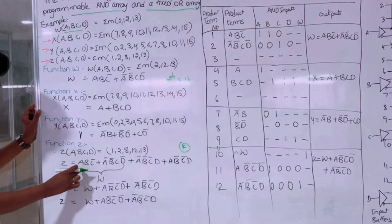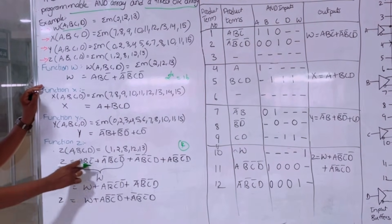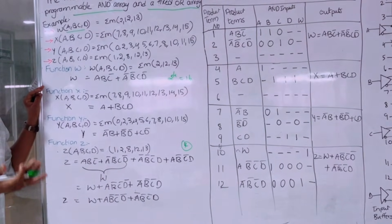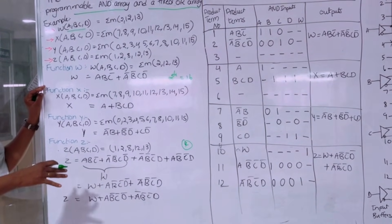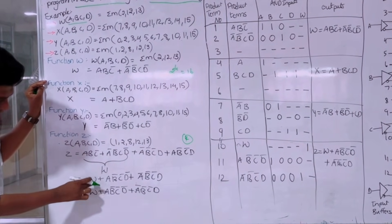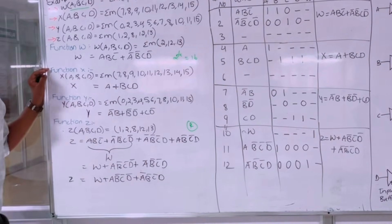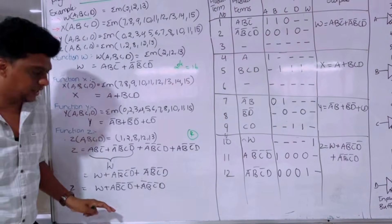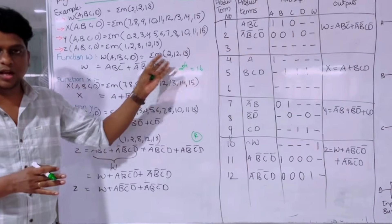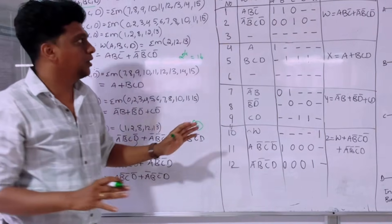To reduce Z from four to three product terms, we note that A B C bar plus A bar C D bar equals W. So we replace that part with W. The output variable W can also act as an input. So Z becomes W plus A B bar C bar D bar plus A bar B bar C bar D. Now we have three product terms, satisfying the PAL rule.